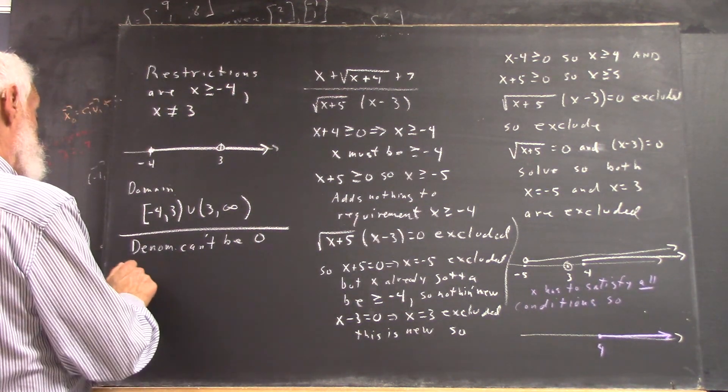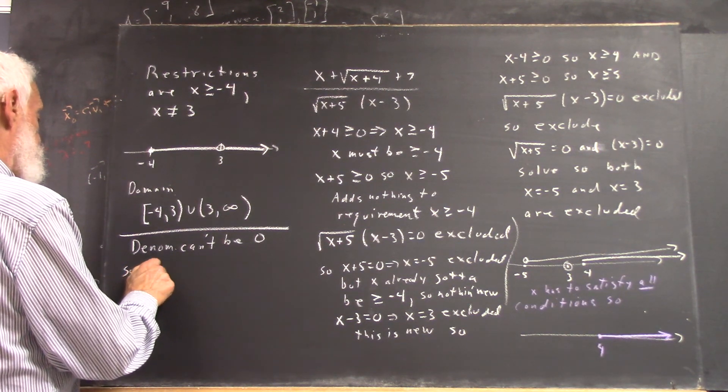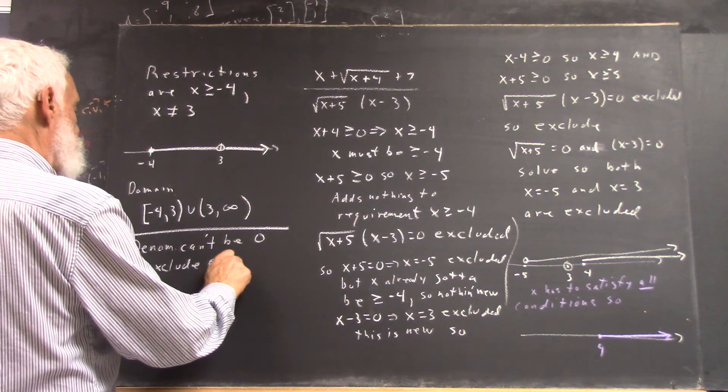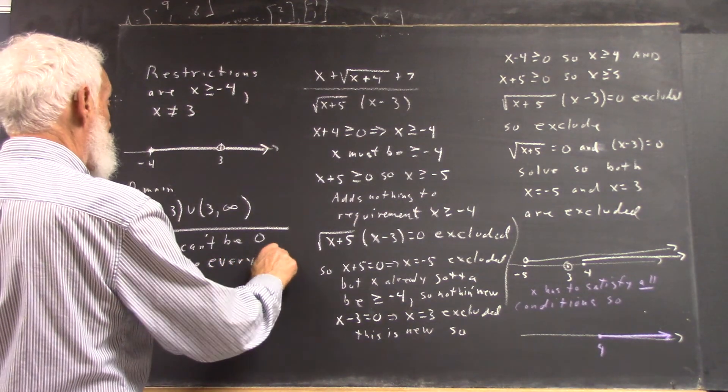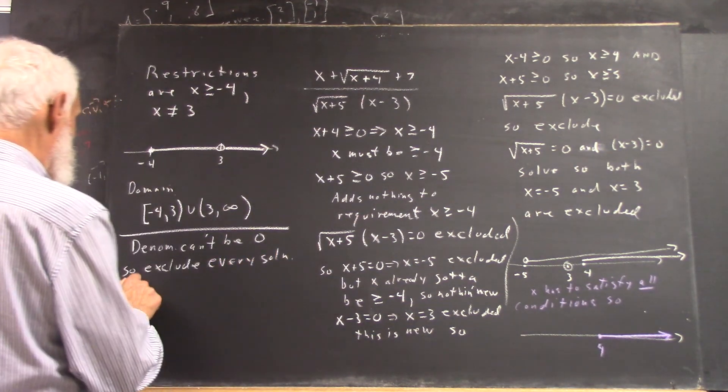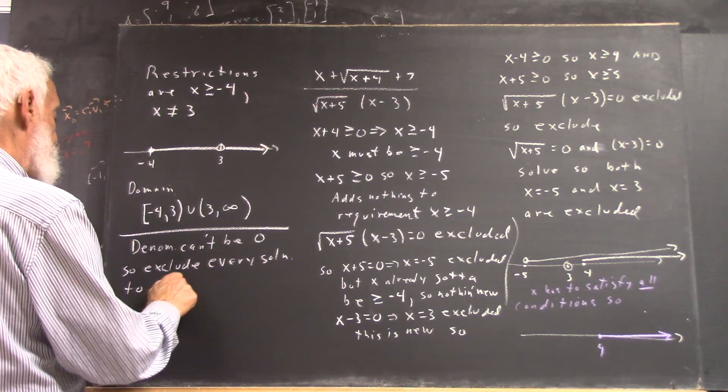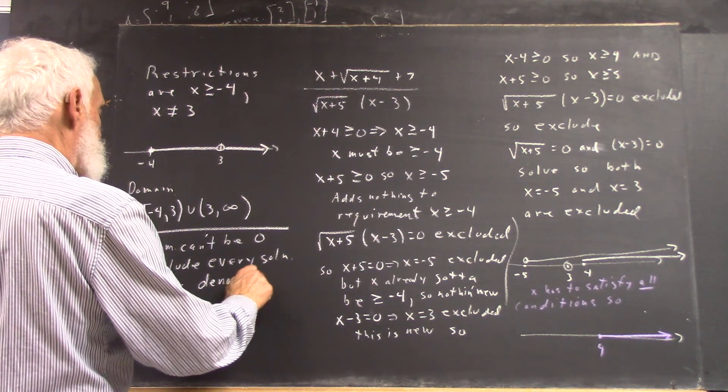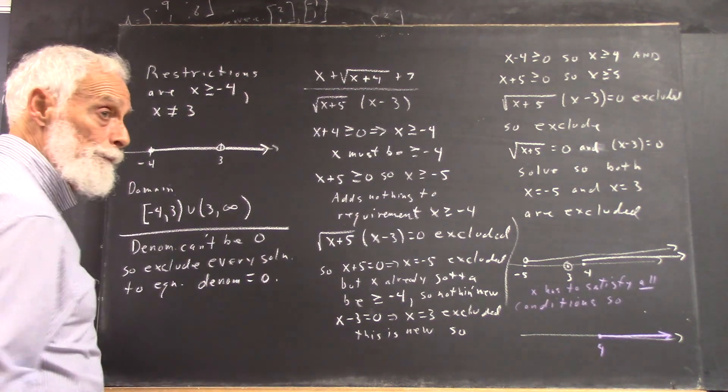So exclude every solution to the equation you get when you set the denominator equal zero.